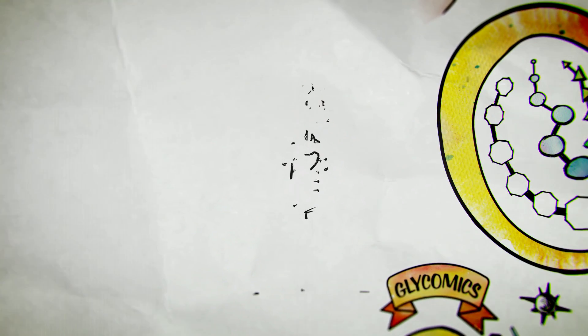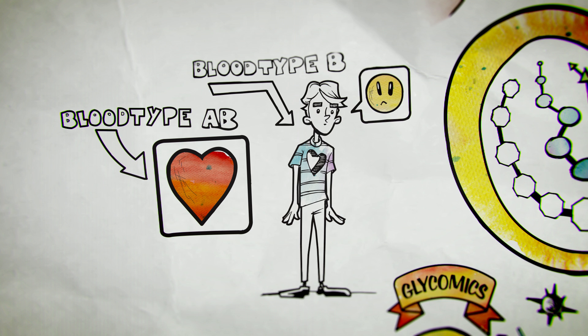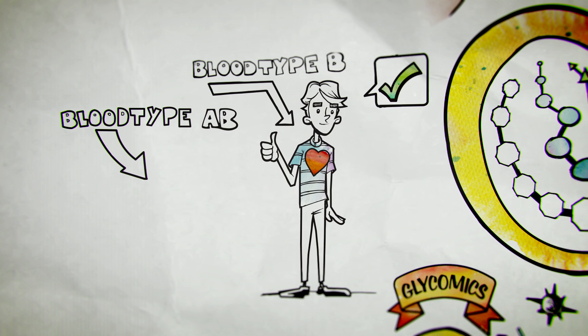We may even be able to perform organ transplants on donors with incompatible blood types by tricking the immune system into ignoring the glycans on foreign blood types.